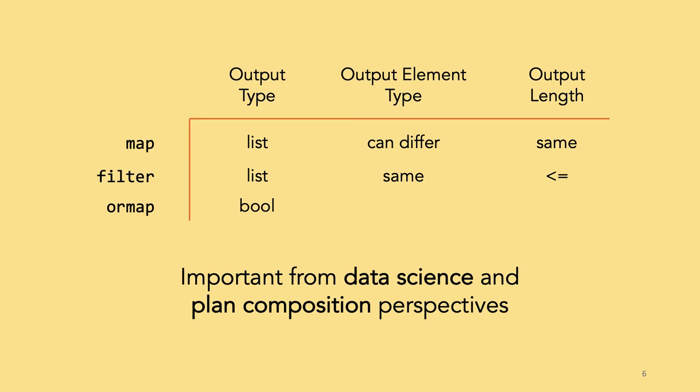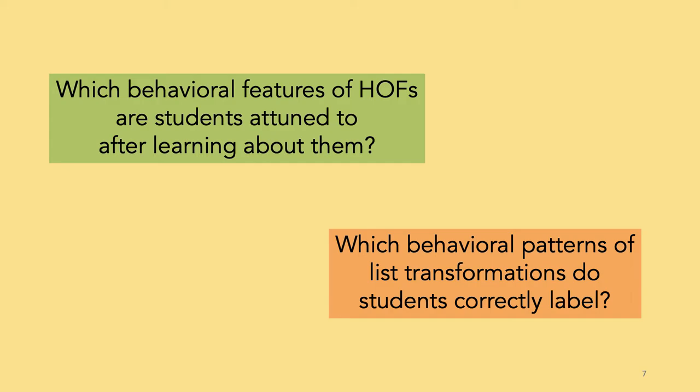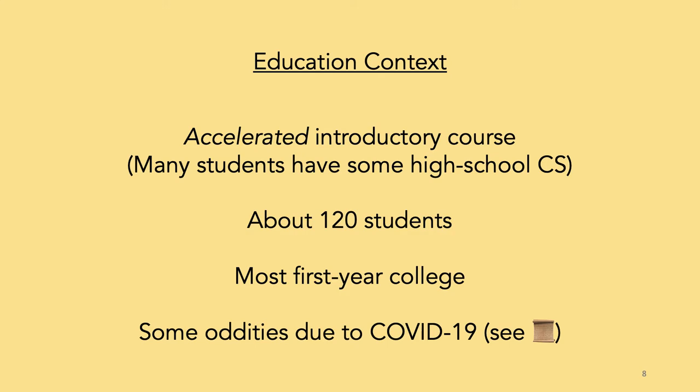Recognizing behavior is especially relevant when we use examples to drive planned composition and decomposition. This is foundational to both computer science and data science. Given this background, we set out to study two main questions: roughly, after students have had some experience with higher-order functions, which features do they properly recognize? The precise research questions are in the paper. We did this in the context of an accelerated introductory course, so about two-thirds had prior programming experience and about a third did not. Students learned to program with higher-order functions and did multiple iterations of our activities before and after the semester.